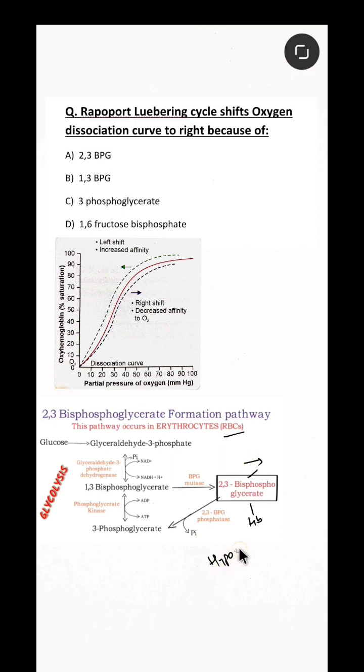Under hypoxic condition, 2,3-BPG concentration is increased in RBC, which favors the release of oxygen to the tissue even in low partial pressure of oxygen. Hence the answer is 2,3-BPG.